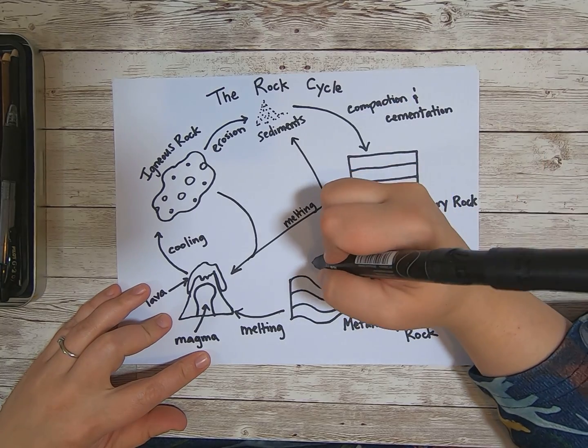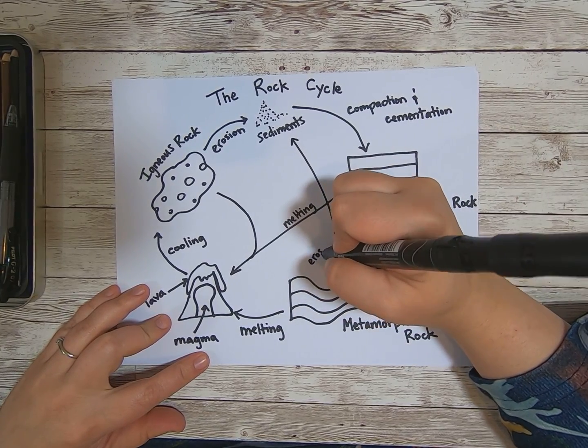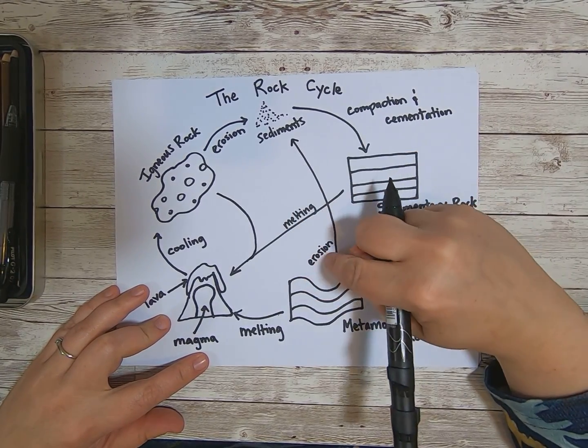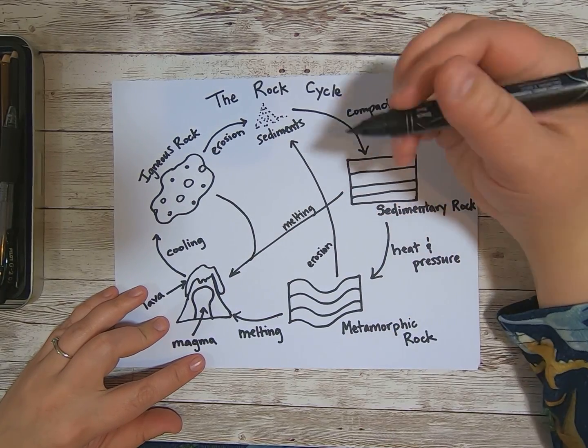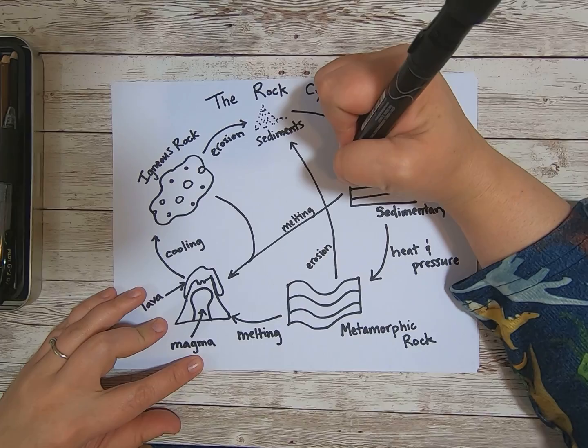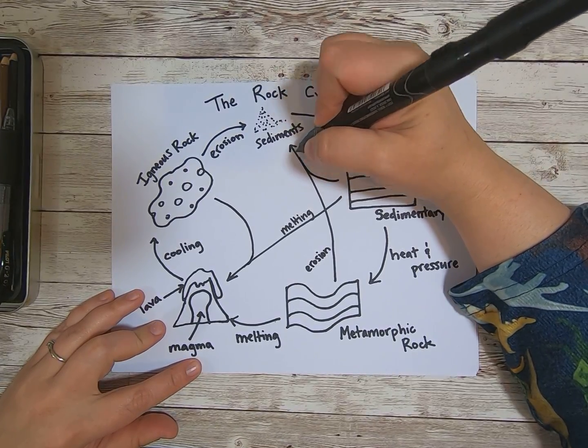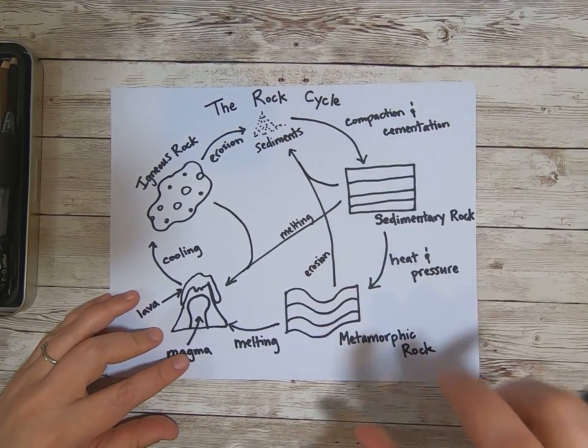It can go all the way up here. We're going to call this arrow erosion. Erosion. It's going to break down into sediments. And guess what? My sedimentary rock can do the same thing. My sedimentary rock, if it wants to, it can join that arrow and it can go through erosion too.